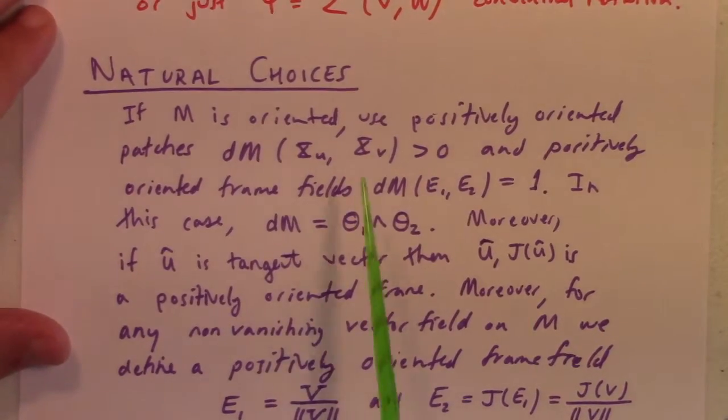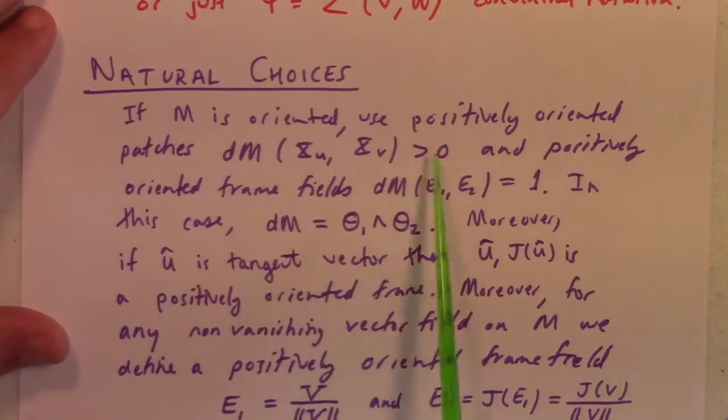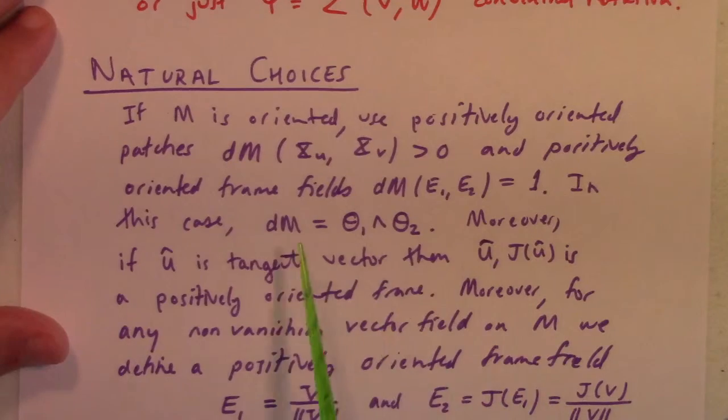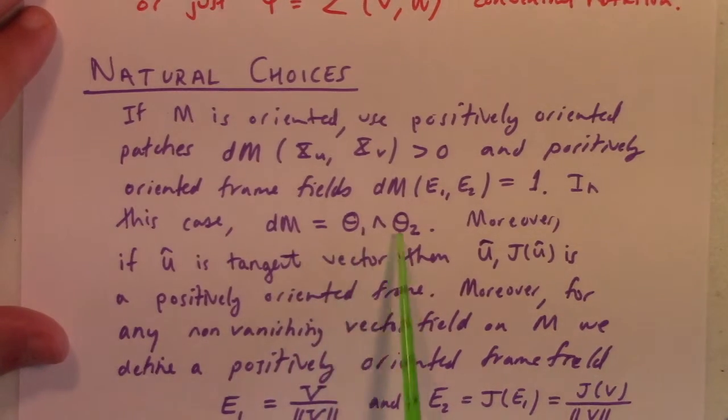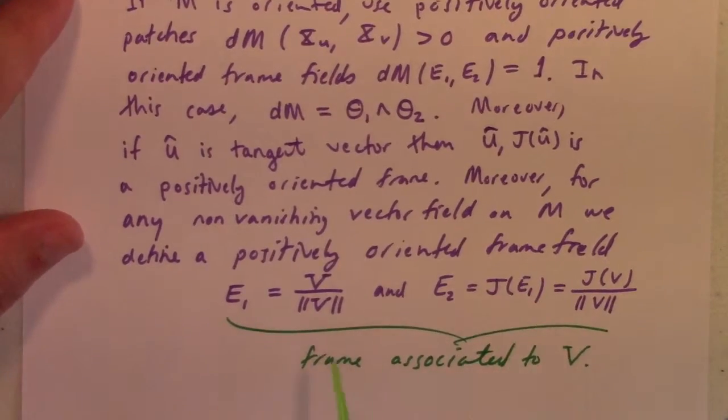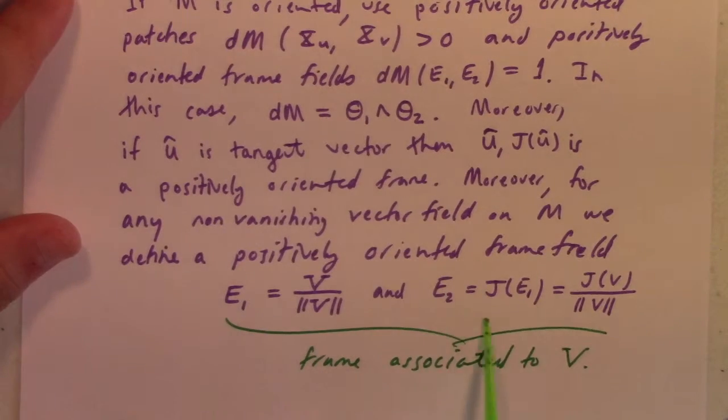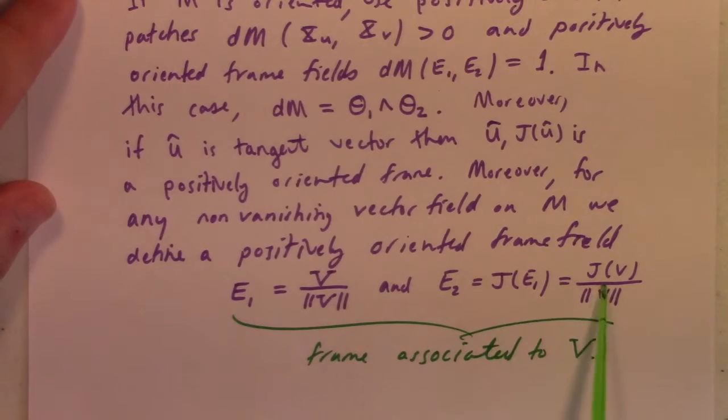So just to point out, so some natural choices. If you have a surface and it's oriented, you can use positively oriented patches, dM, and positively oriented frame fields. In this case, dM, theta₁, theta₂, moreover, if you have a unit tangent vector, then u, j of u is a positively oriented frame. Moreover, for any non-vanishing vector field on M, we can define a positively oriented frame field by just normalizing the field, and then feed it to the rotation and, rotate by 90 degrees, j, which is based on the cross product. There it is. Now we use the cross product to get this, but if you think about it, you could really do the same without directly using the cross product. But anyway, more becomes a clearer question.